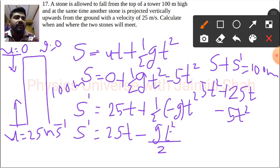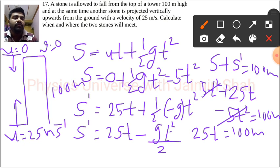So 5t squared gets canceled out, and we are left with 25t is equal to 100 meters, so t will be 4 seconds.